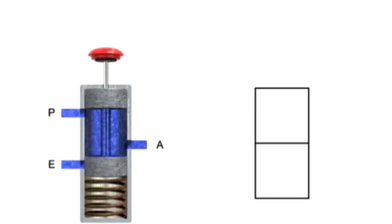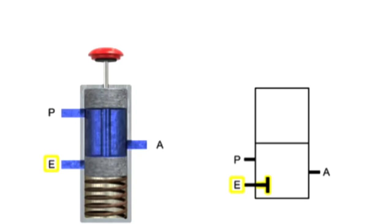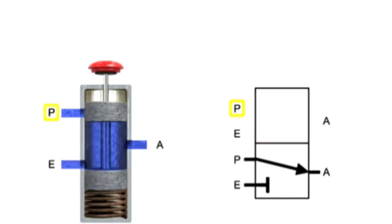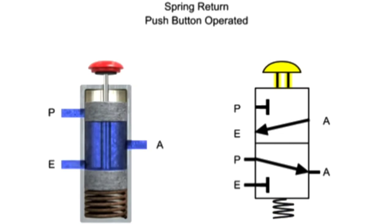Here is another three-way, two-position valve. This valve also has an inlet port P, exhaust port E, and output port A, but they are in a different configuration. In its normal position, exhaust port E is blocked and fluid flows from pressure port P to outlet port A. In the second position, pressure port P is blocked and fluid flows from outlet port A to exhaust port E. The valve is also spring return and push button operated.